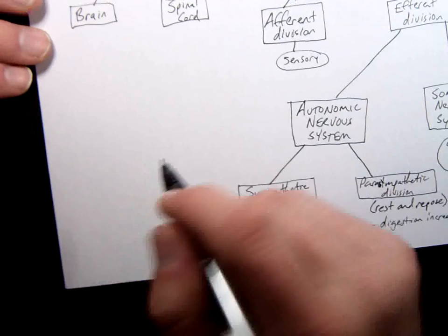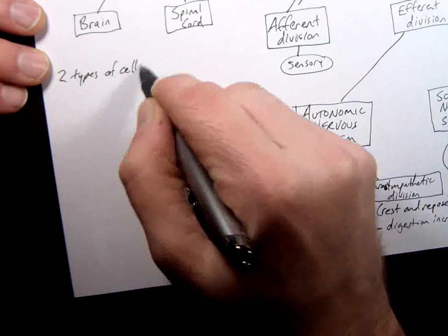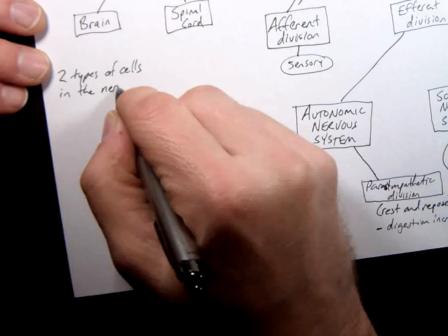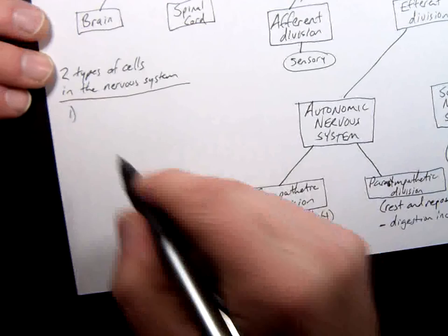All right got one little area right here we're going to write down one more piece of information about types of cells and then we're going to call it a day for lecture. So two types of cells in the nervous system.